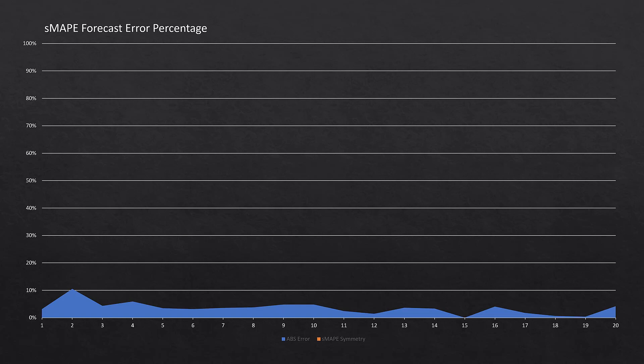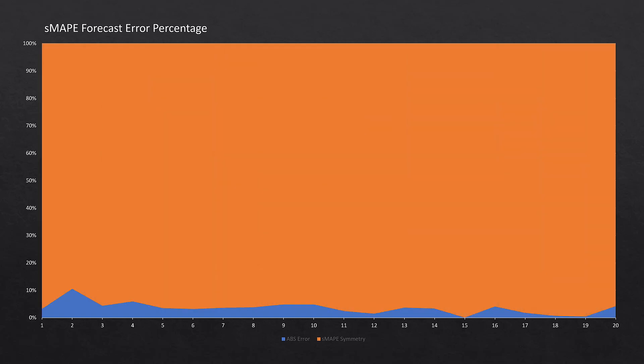The absolute error then flattened out around 5% over the next nine to ten years, and then decreased further. That's because the graph of the time series flattened out, so the actual and the forecast got closer and therefore the absolute error decreased. The 100% represents all the potential error that could be in SMAPE, but the absolute error represents just the numerator in that fraction.